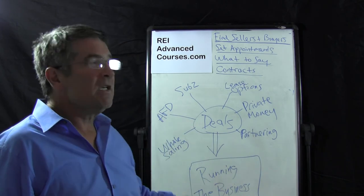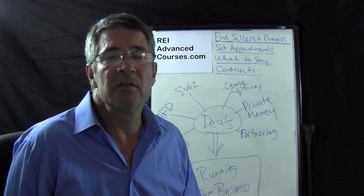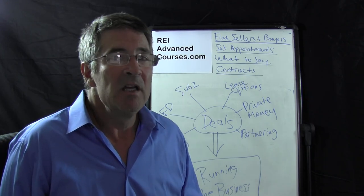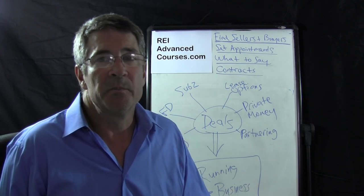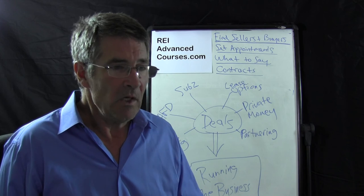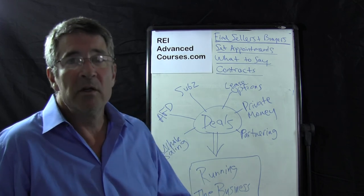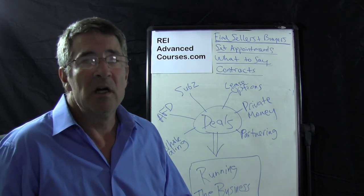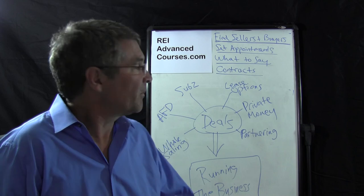An AFD is an agreement for deed, or land contract. This is like an installment sale, and in certain states it's a wonderful way to be able to buy or control the property.